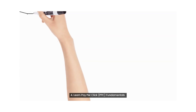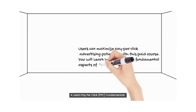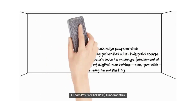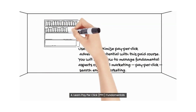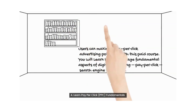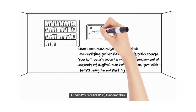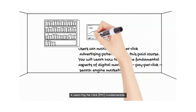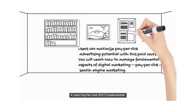Fourth course: Learn Pay-Per-Click Fundamentals. Users can maximize pay-per-click advertising potential with this paid course. You will learn how to manage fundamental aspects of digital marketing pay-per-click search engine marketing, and how to formulate, execute, and plan effective pay-per-click campaigns. You should learn this course because it will take you from basics to advance for pay-per-click advertising. It will teach you about the different components of PPC.